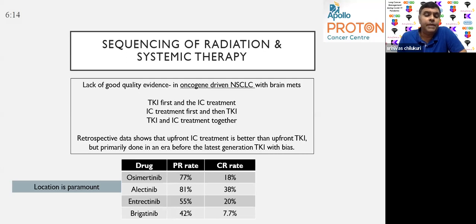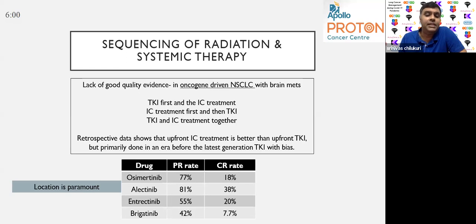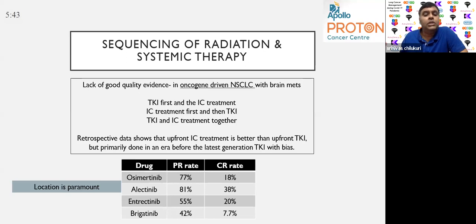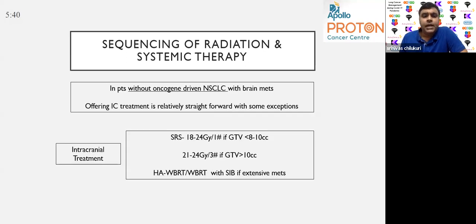Why location is paramount: the partial response rate for radiation is near 100 percent, but for drugs like osimertinib or alectinib — the highest CNS penetration drugs — the partial response rate is near 80 percent and the complete response rate is between 20 to 40 percent. So there are patients who would not respond to these therapies, and if they progress in a critical location it would lead to significant deterioration of neurological function and quality of life.